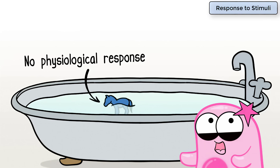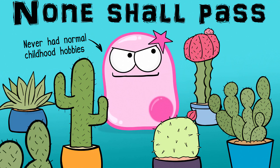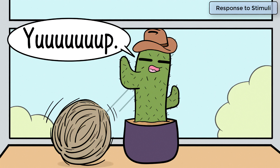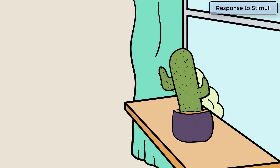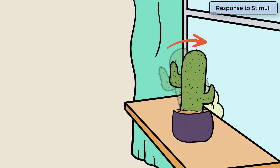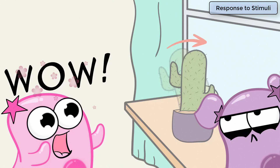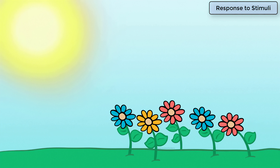A response to a stimulus might not be obvious. I used to have a lot of cacti when I was a kid. And while I wouldn't call them especially exciting, I did notice that if I left them on a windowsill and didn't rotate them, they would bend over a period of a few weeks. That's amazing because they are responding to light. Plants responding to light is a response to a stimulus.